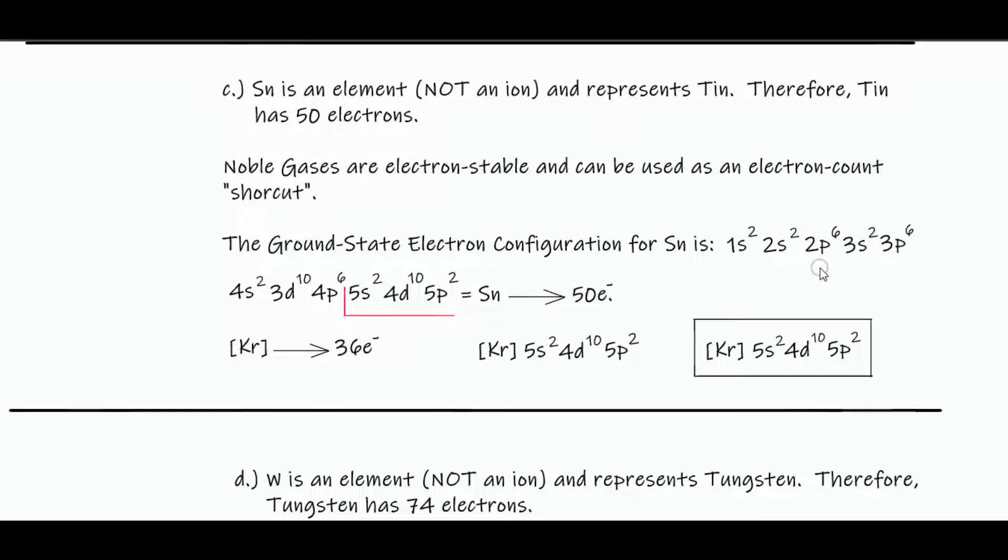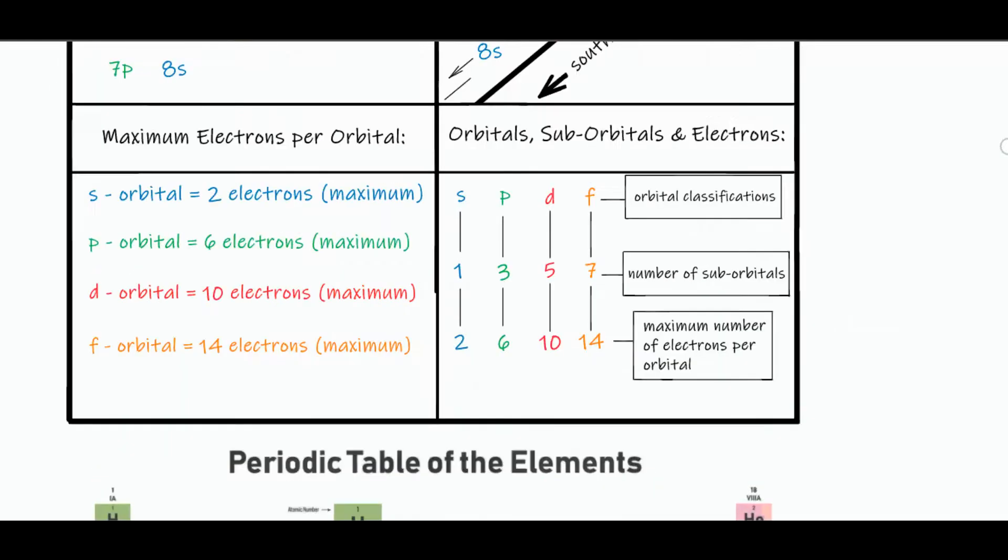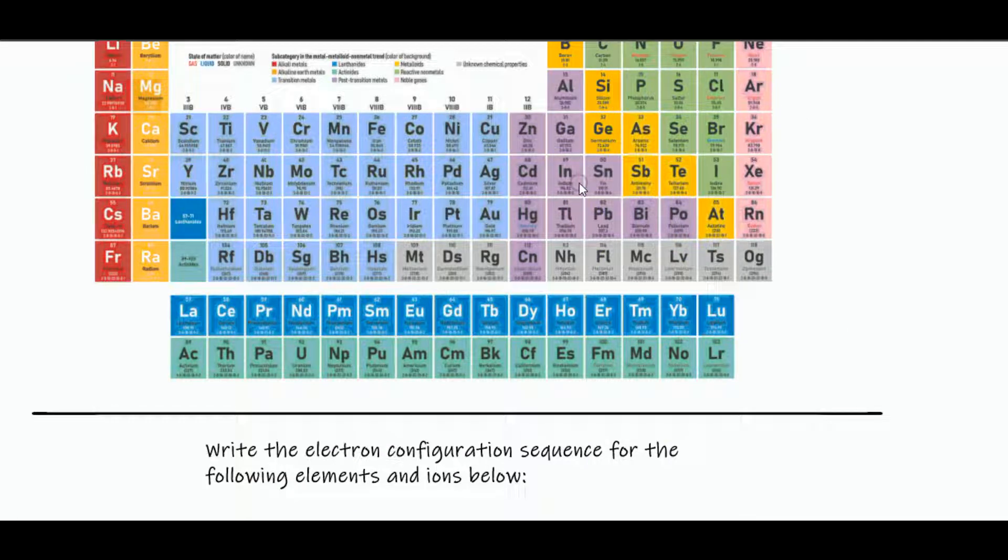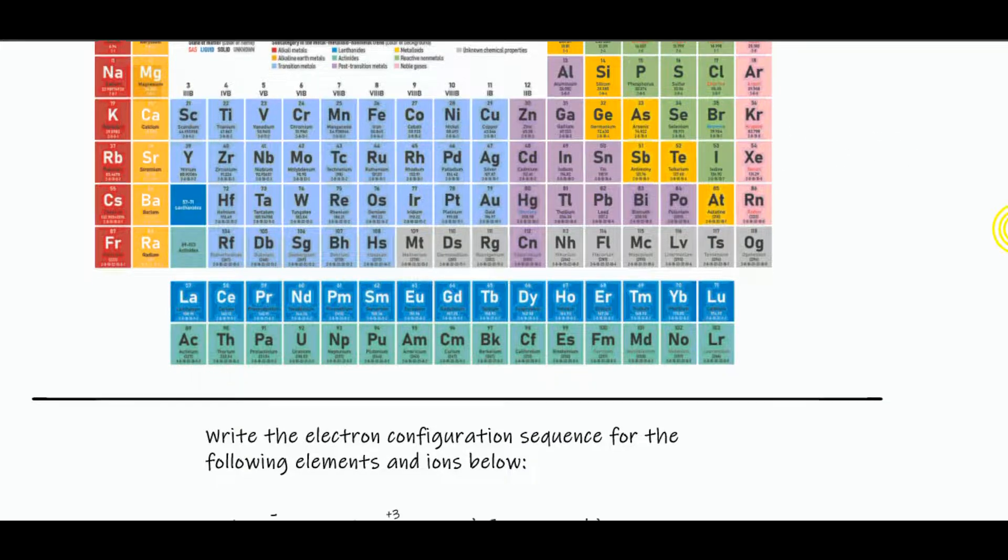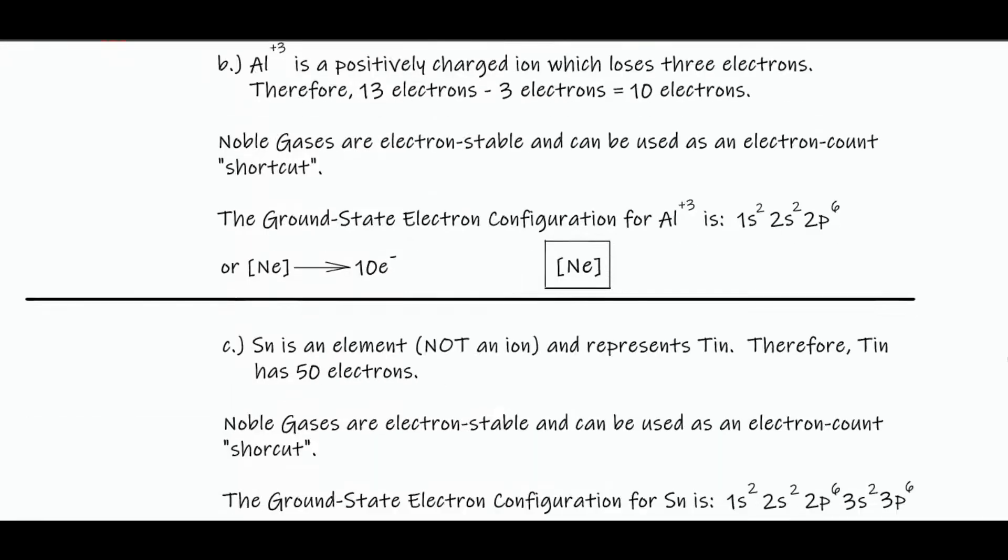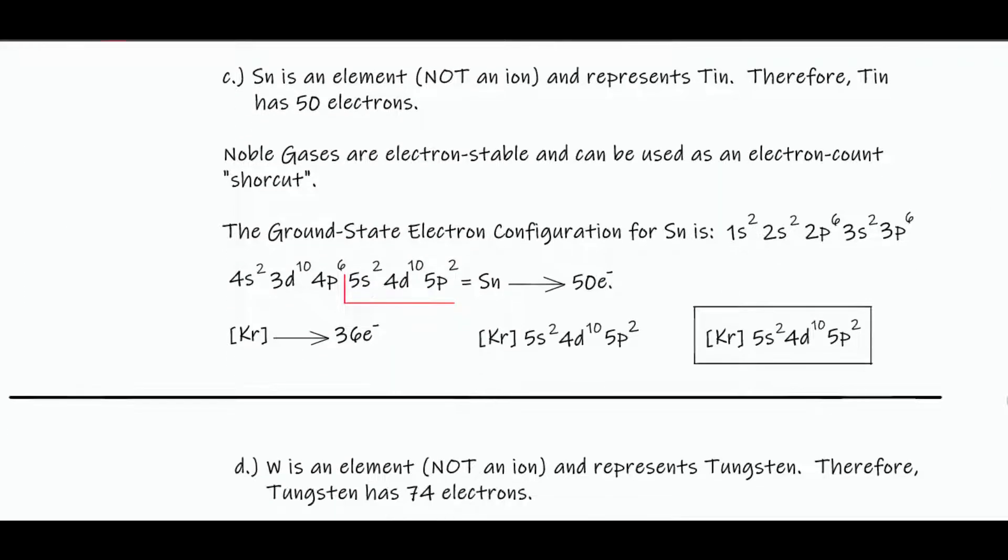Now a thing you've got to be careful of because we can start with krypton and then add 14 electrons to get to tin. So it would be krypton plus the remaining ground state electron configuration. But one thing you've got to be careful of is if you were to do it as if there was no noble gas shortcut, but you will run into a problem when you start with krypton and then realize that your orders are mismatched.